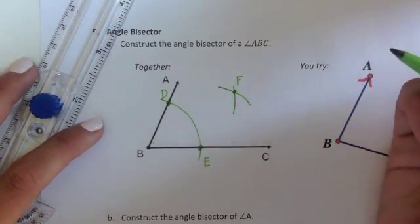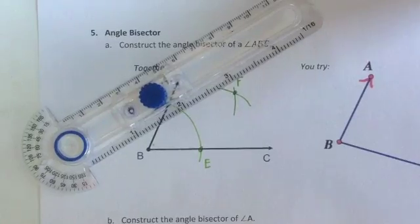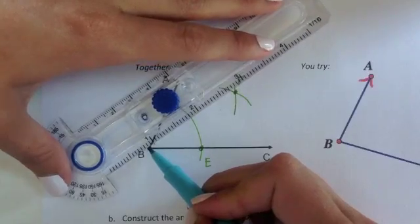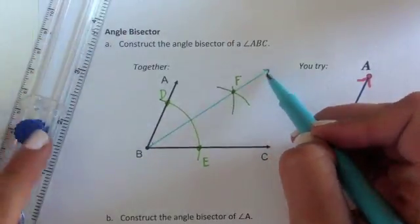And I'll call this F. Then my last and final step is to actually draw that bisector in. Just like you have to draw the perpendicular bisector in, here you have to draw the angle bisector in.